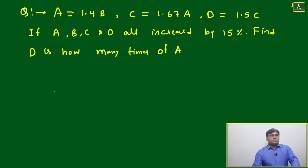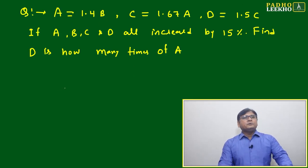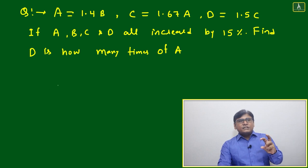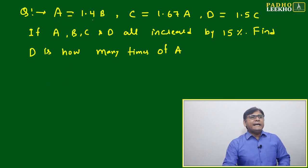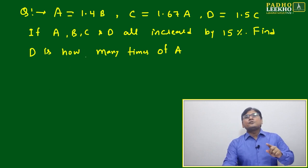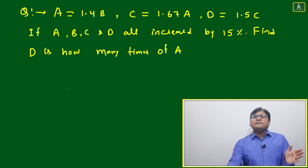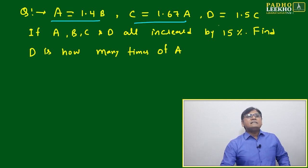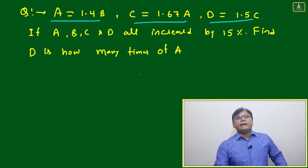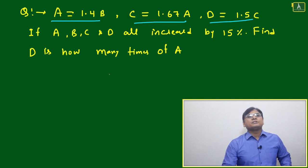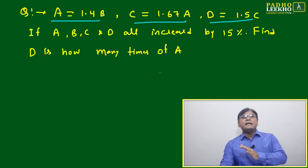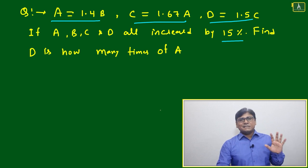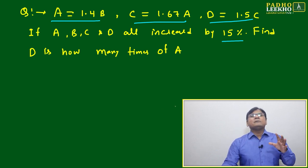Now we'll come to the next question. This question gives you a mixture of ratio and percentage. A is expressed in terms of b — a is 40 percent more than b. C is 67 percent more than a, and d is 50 percent more than c. A, b, c, and d are all increased by 15 percent.